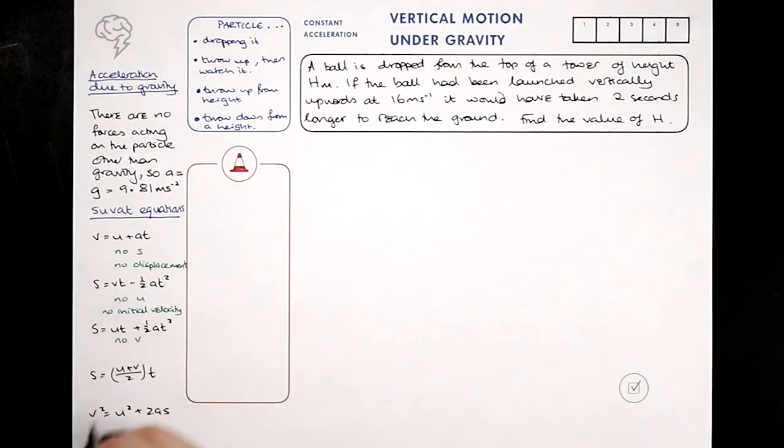This one's got no V, V is final velocity. So if we're not interested in the final velocity and we don't know it, we would use this equation. This equation has got no A in it, which is the acceleration, and this equation has got no T in it, which is the time.